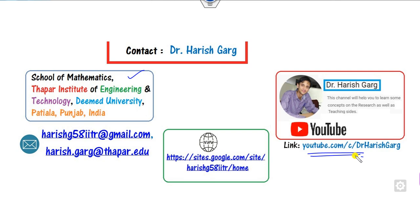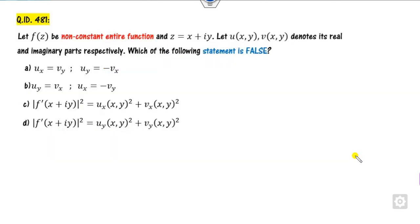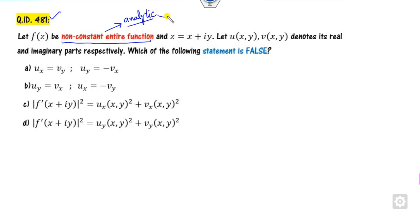You can follow this link for finding the various videos on the examinations. This is the first question, ID 481. What is given to you? This is a non-constant entire function. The meaning of a non-constant entire function is that the function is analytic, so it is satisfying the CR equations.